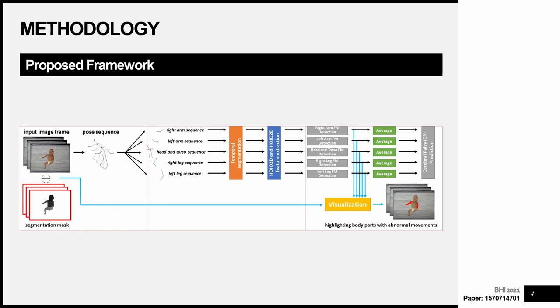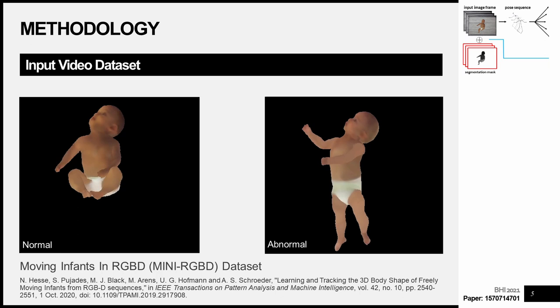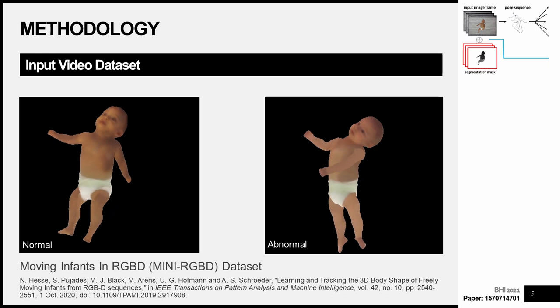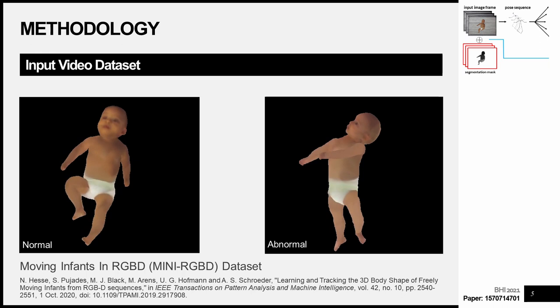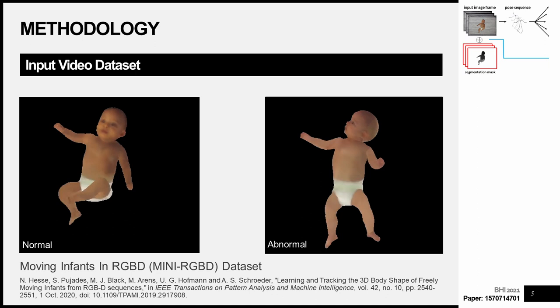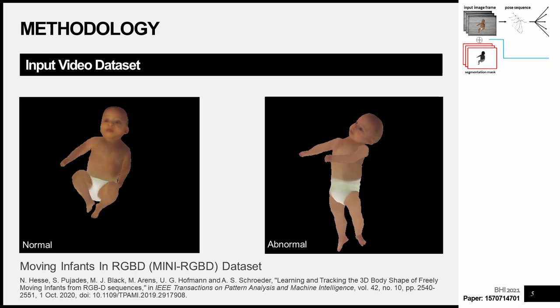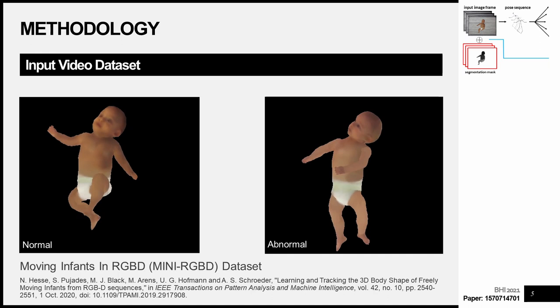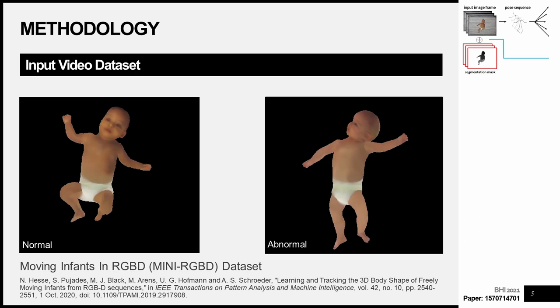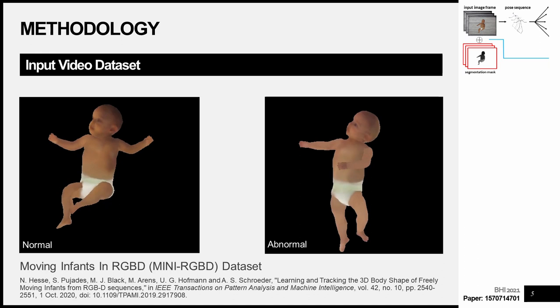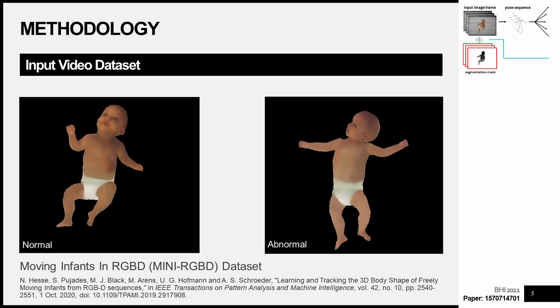The input video dataset we're using is the Moving Infants in RGBD dataset. This consists of 12 synthetically generated videos each 1000 frames long, mapping real-world infant movements to synthetically generated 3D models of infants. Each video sequence was labelled as normal, where fidgety movements were present, or abnormal, where fidgety movements are absent. The two videos on screen represent normal and abnormal infant movements. In the video on the left we can see greater fluidity, less repetitive movements and more complexity of movement — the movement characteristics we're trying to differentiate between to form our final classification decision.